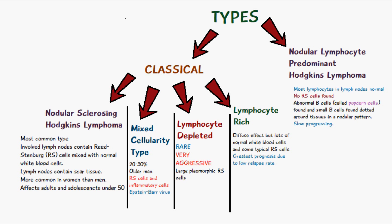Nodular sclerosing Hodgkin's lymphoma is more common in women than men and affects adults and adolescents under the age of 50. The mixed cellularity type occurs in 20 to 30 percent of cases and is more common in older men. Here we have Reed-Sternberg cells but they're mixed with inflammatory cells as well, like eosinophils, basophils, and cytokines. The main cause of the mixed cellularity type is the Epstein-Barr virus.